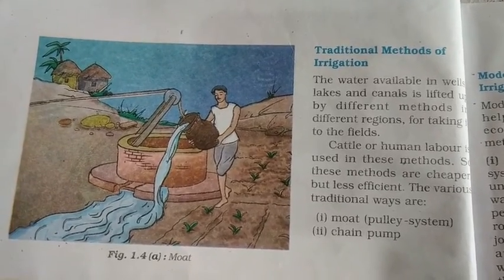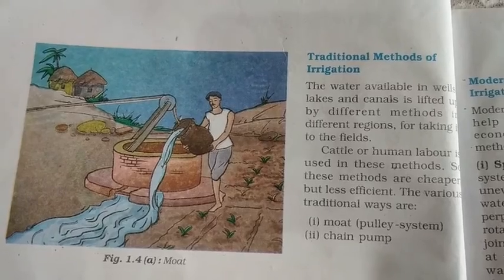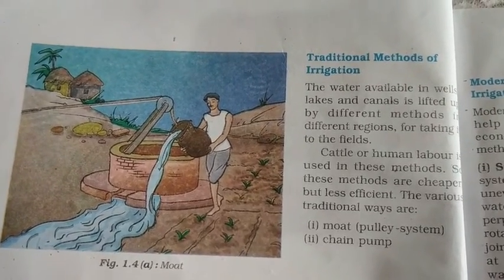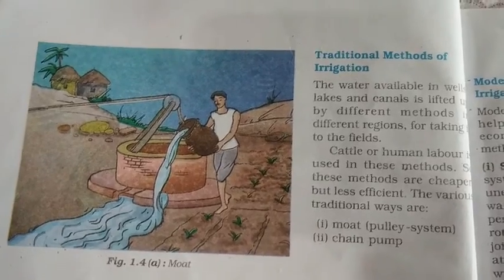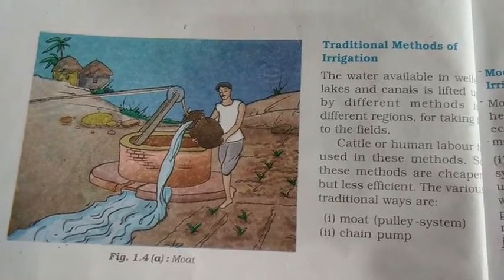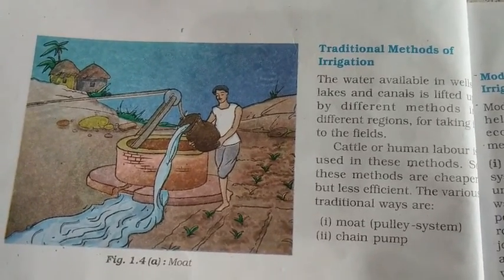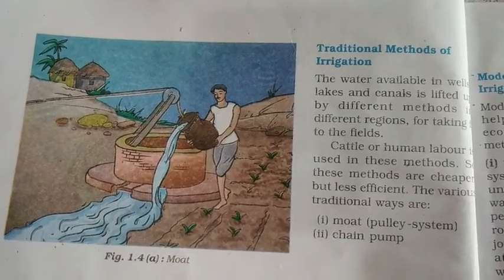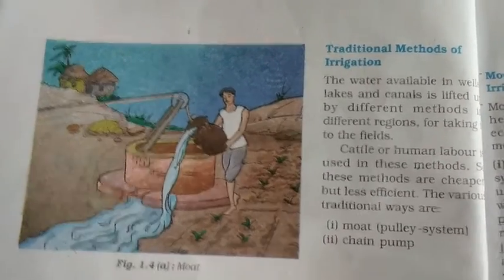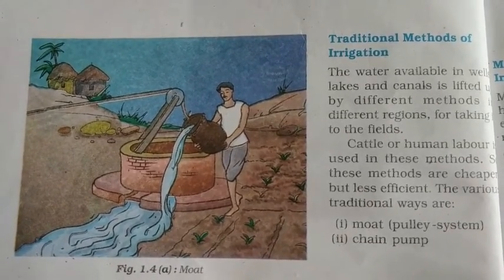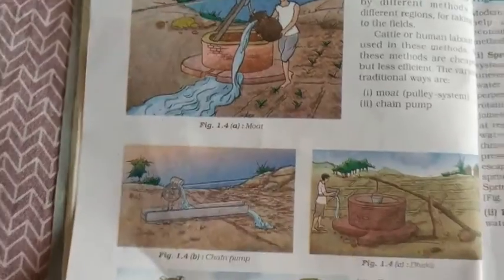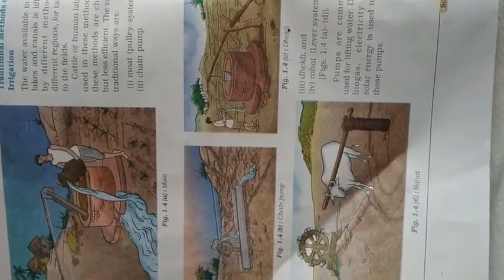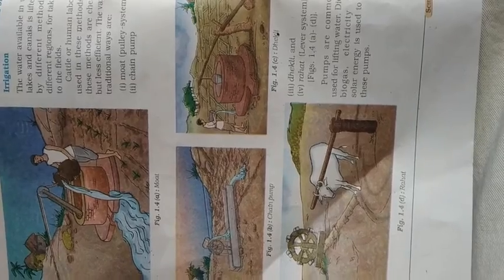In the traditional methods, cattle and human beings were used in different ways for the supply of water. These methods are very cheap but not very efficient — they take a lot of time and waste a lot of energy. The various traditional methods are the moat, the chain pump, the Dekli, and the Rahat.